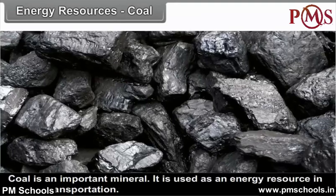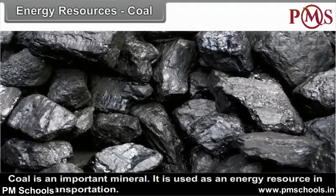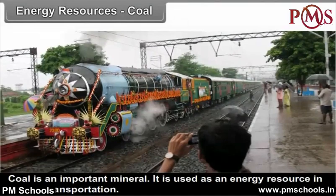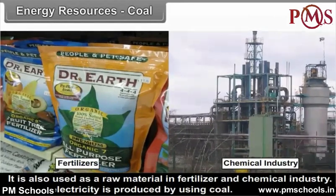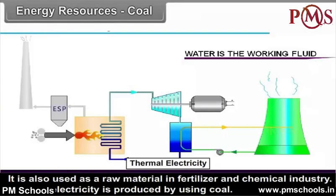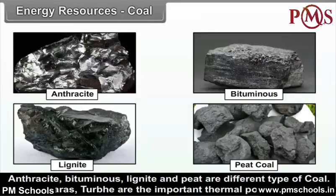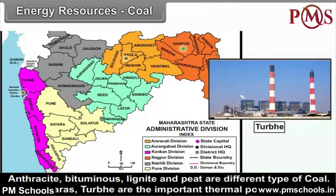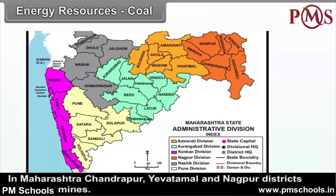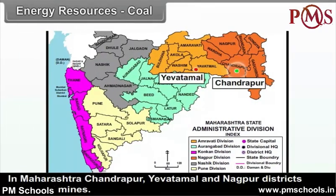Coal. Coal is an important mineral used as an energy resource in railway transportation and as a raw material in fertilizer and chemical industries. Thermal electricity is produced by using coal. Anthracite, bituminous, lignite and peat are different types of coal. Koradi, Paras and Turve are the important thermal power stations. In Maharashtra, Chandrapur, Yavatmal and Nagpur districts have coal mines.